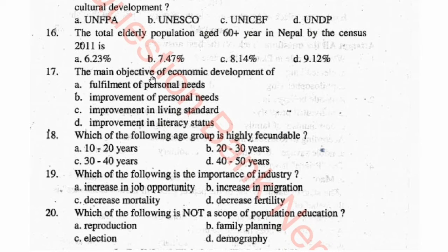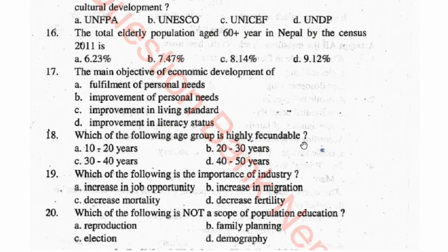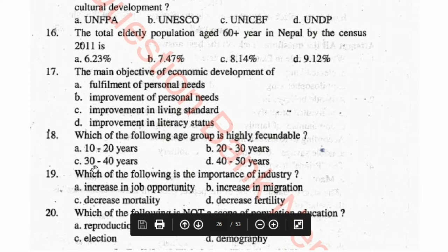Question 17: The main objective of economic development is — options: fulfillment of personal needs, improvement of personal needs, improvement in living standard, improvement in literacy status. Question 18: Which of the following age group is highly fecundable? Options: 10–20 years, 20–30 years, 30–40 years, 40–50 years.